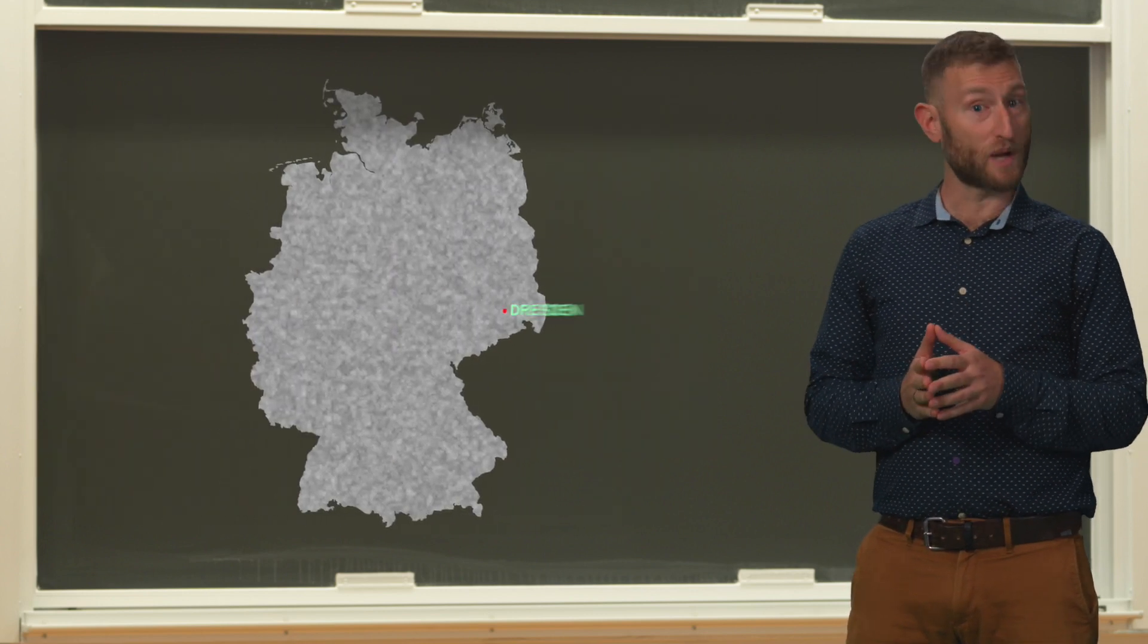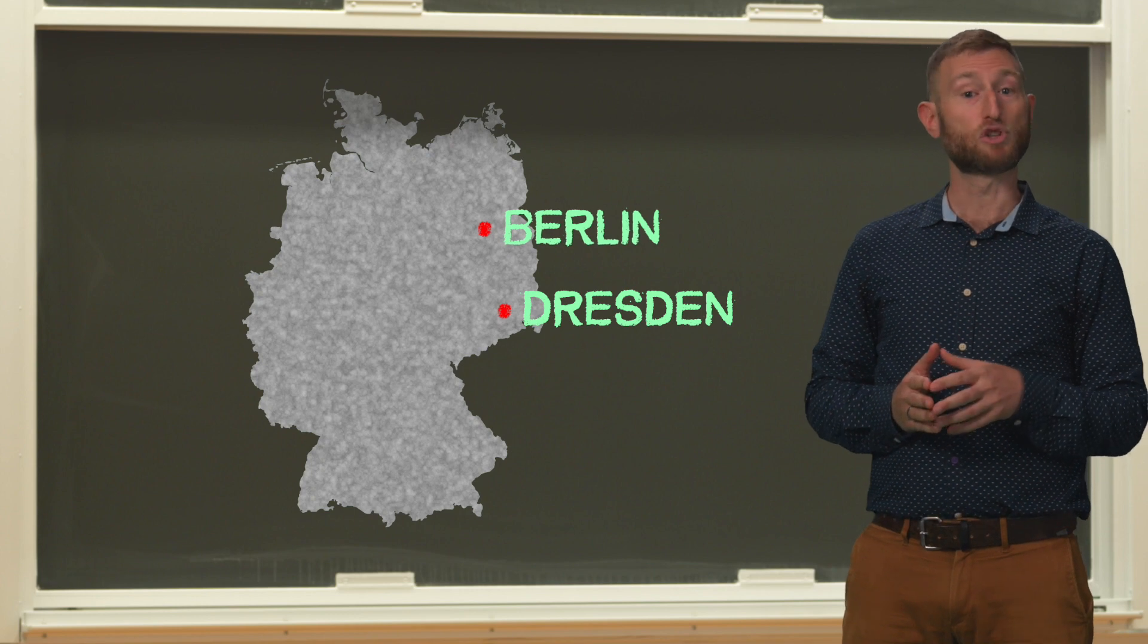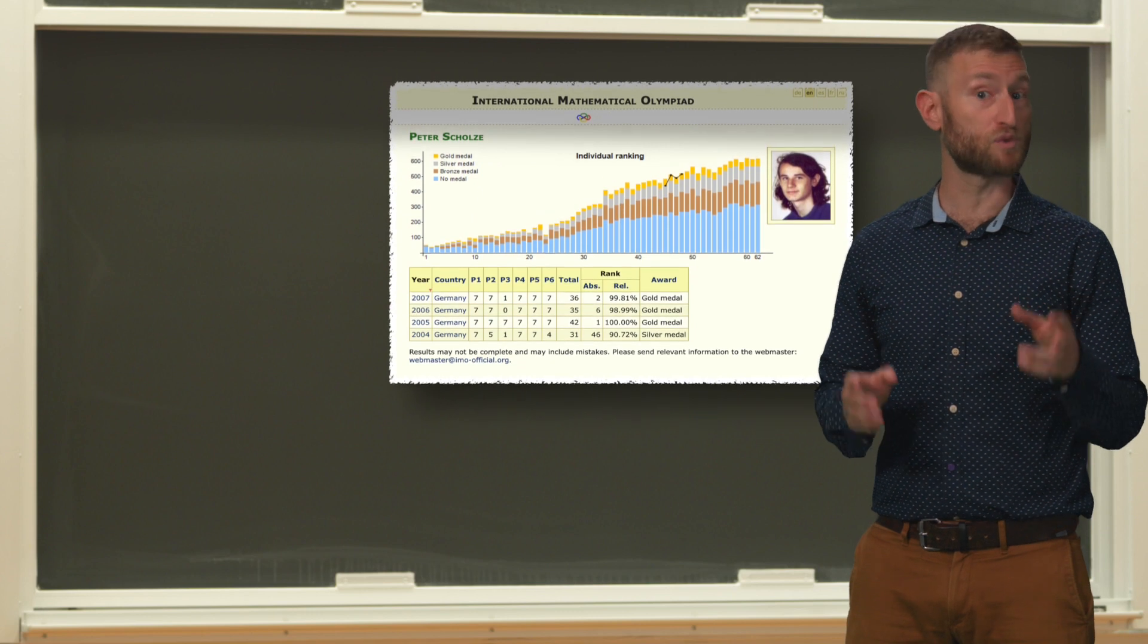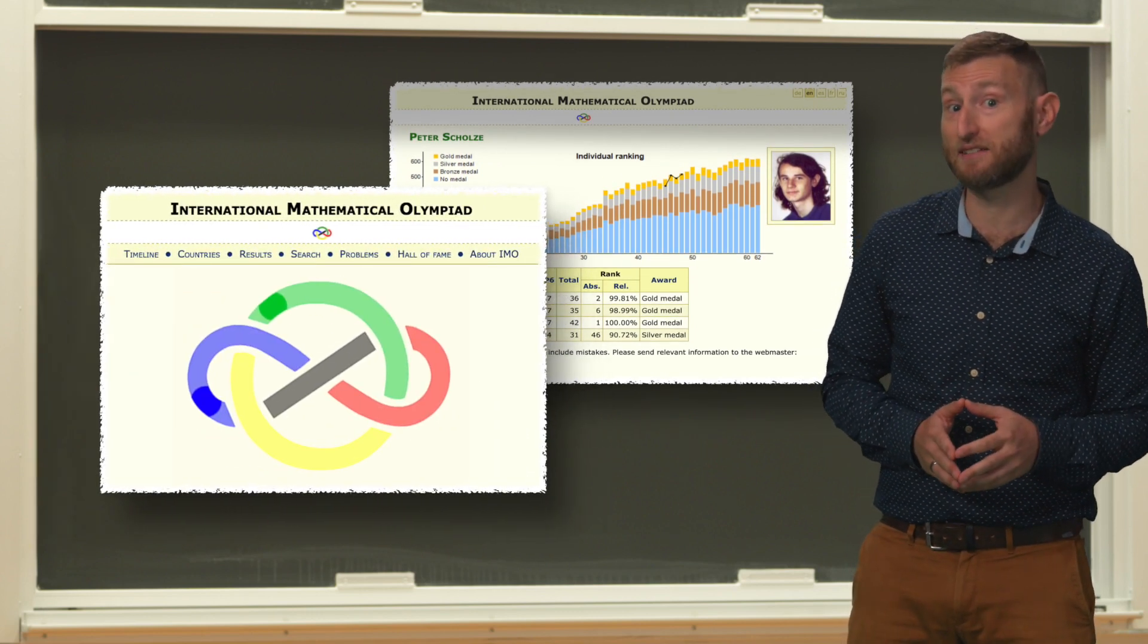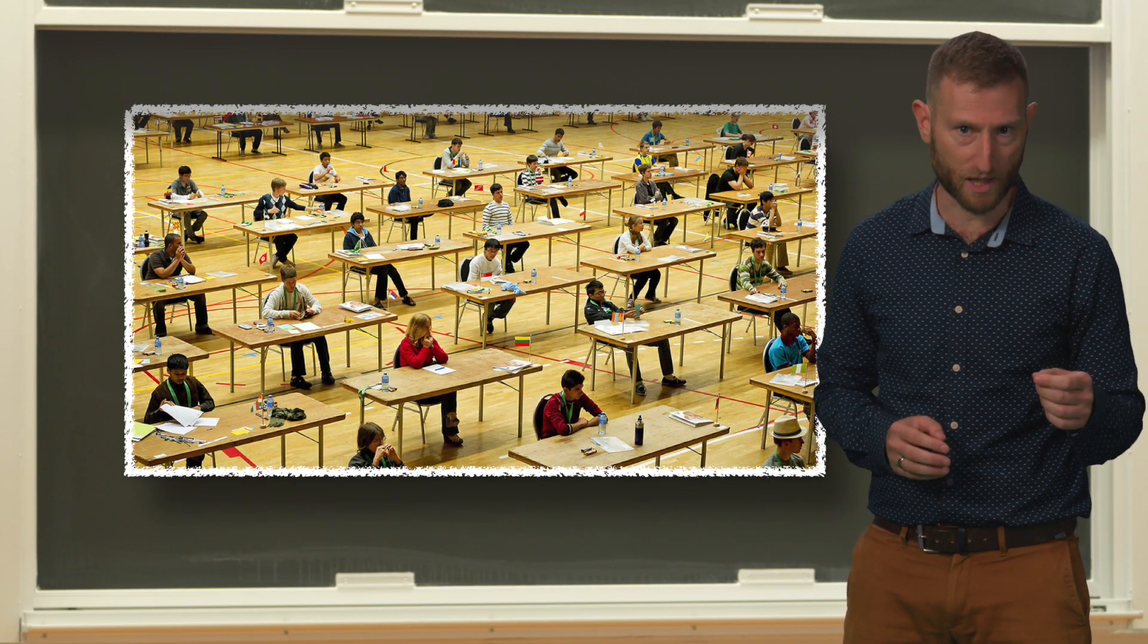So who is Peter Scholze and what are his contributions to mathematics? Scholze was born in Dresden in 1987 and grew up in Berlin. Early on, he displayed an extraordinary talent in mathematics by winning three gold medals and one silver medal at the International Mathematics Olympiad, a contest for high school students featuring fiendishly difficult problems.